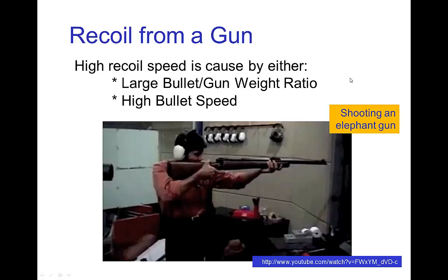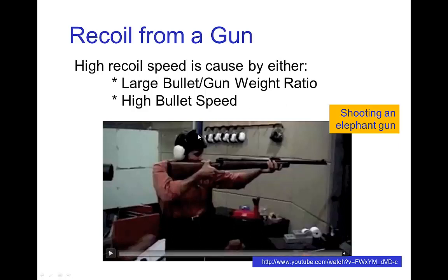We get a large recoil speed either when the ratio of the bullet weight to the gun weight is large — in other words, if it's a large bullet, we tend to have a high recoil speed and high recoil force — and also if the speed of the bullet is high, then we have a lot of recoil.